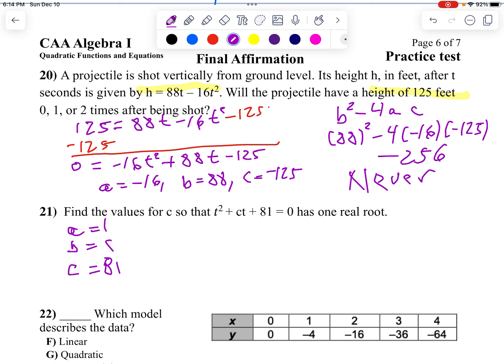In order to have one solution, I want b squared minus 4ac to equal 0. So I'm going to go b squared minus 4ac. I want that equal to 0. Well, b is c. So I'm going to say c squared minus 4 times 1 times 81. I want that to equal 0.